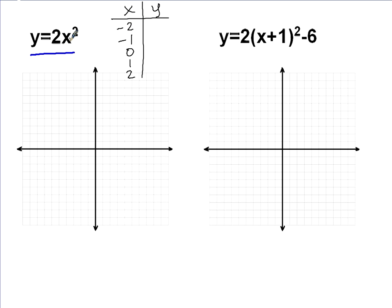If we plug these in, we've already done this. Negative 2 squared is 4. But then I have to multiply it by 2, so I actually get 8. And negative 1 squared, we did that. That's 1, but times 2 is 2. 0 squared is 0, times 2 is still 0. 1 squared is 1, times 2 is 2. And you can kind of see the pattern here. 2 squared is 4, times 2 is 8.